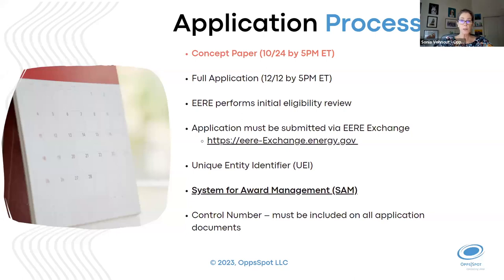The application process is two steps. The first one, you're going to have to write a concept paper, which is due on October 24th, and then there's the full application due on December 12th. Keep in mind that after 5 p.m. Eastern time they will not accept your applications, so I suggest you submit a couple of days early. Applications have to be submitted through the EERE Exchange, and you have to have a unique entity identifier, or UEI, which you get when you've successfully registered through the System of Award Management, or SAM, at SAM.gov.